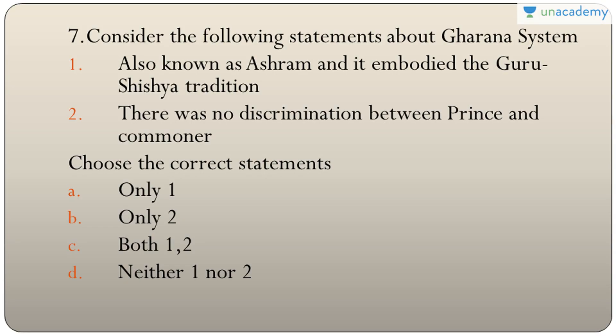Question seven: statements about the Gurukul (Gharana) system — also known as Ashram system, it embeds the Guru-Shishya tradition, and there was no discrimination between prince and commoner. Both are true, so the answer is C — both one and two. Teachers were sages, students lived in the hermitage for about 12 years, and gained knowledge by serving the master.